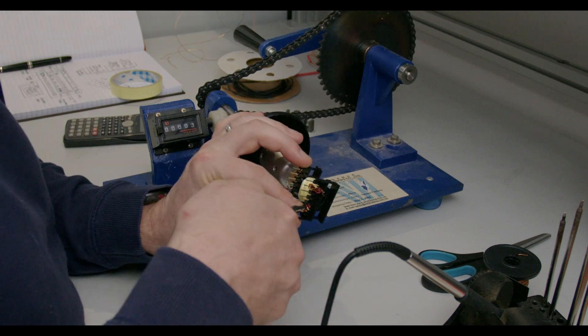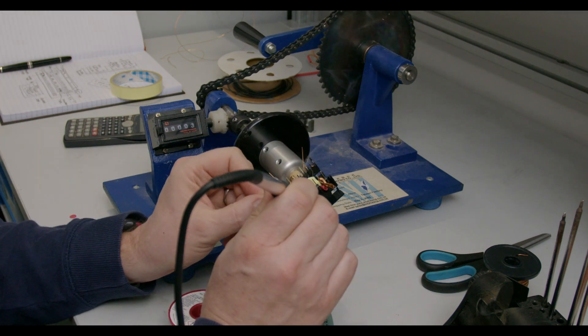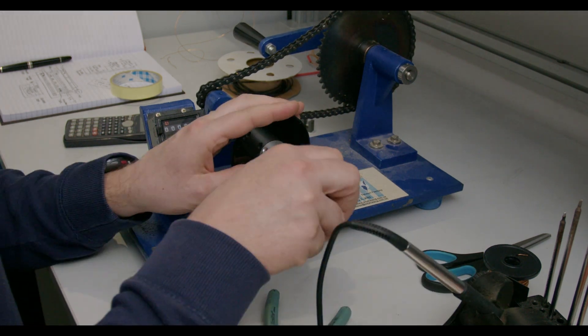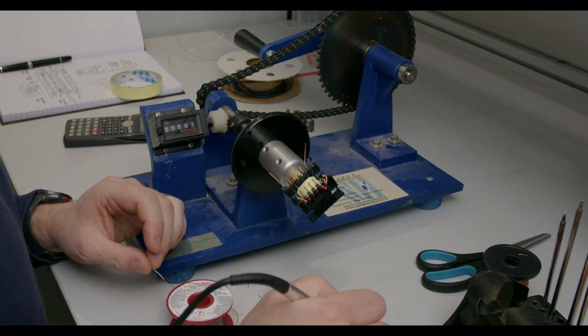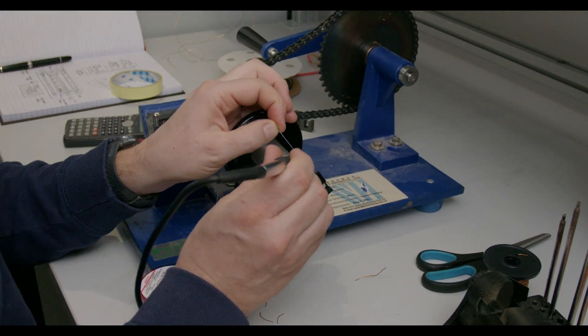So we now have all the wires fitted but things are a bit of a mess. We need to trim the wires to length and electrically connect to the transformer pins. The copper wire we used has an enamel insulation which can be burned off with a soldering iron.